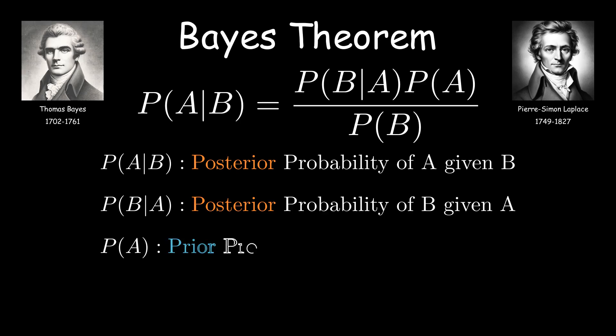P of A is called prior probability because it is the probability of event A before event B has occurred. Similarly, P of B is also called prior probability because it is the probability of event B before event A has occurred.